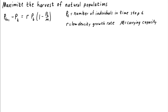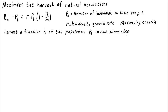Let's say that this population is something like fish, and we want to harvest this population, say for food. We're interested in modeling how much we could harvest from this population. Let's say that in each time step we harvest a certain fraction of the population, and we'll denote this fraction by the parameter h. To add the effect of harvesting to our logistic equation, we just need to subtract off each time step the number of individuals harvested — that is, h times P sub t, the number of individuals harvested each time step.